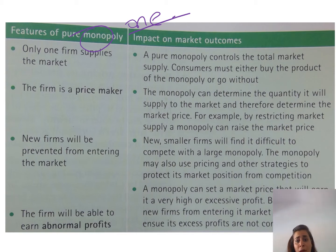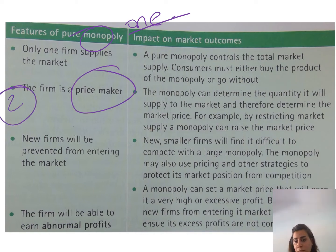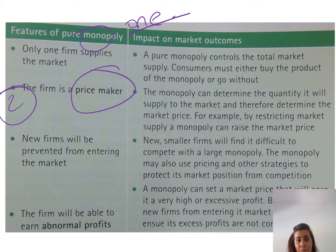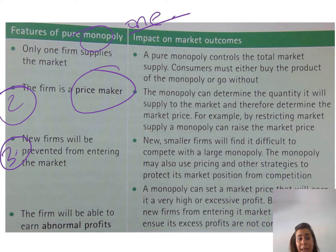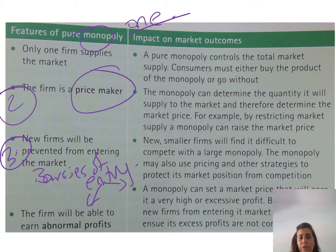The second feature of monopoly is that the firm is considered a price maker because they set the price that they want. They can raise the price and people will still buy because they have no other choice. The third feature is that they will have barriers to entry, whether natural or artificial.